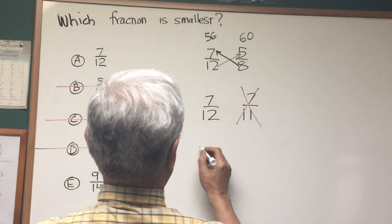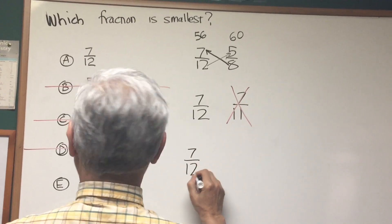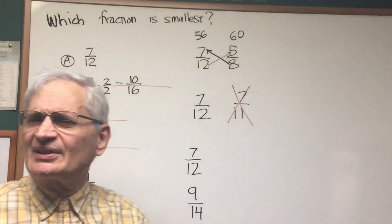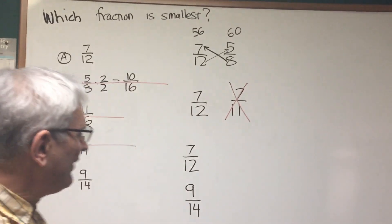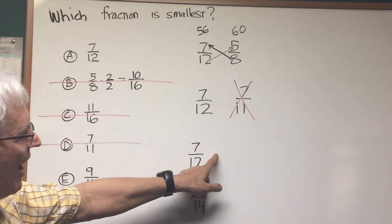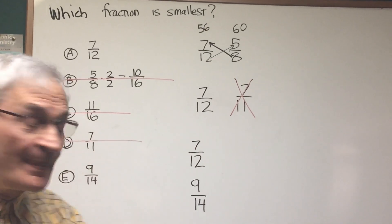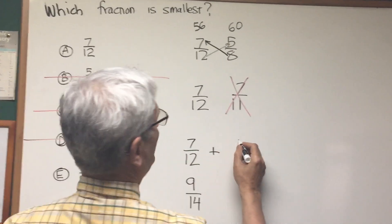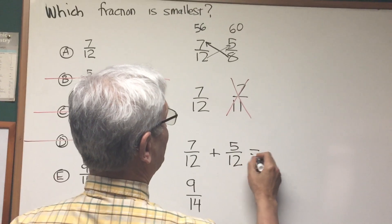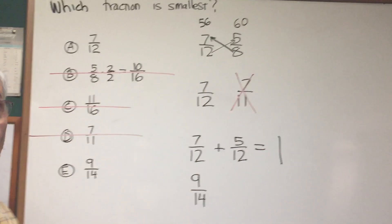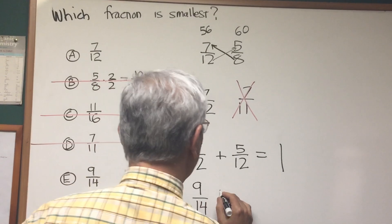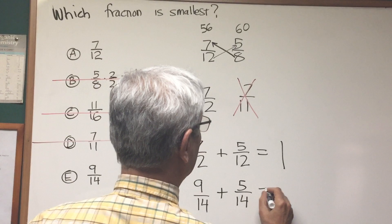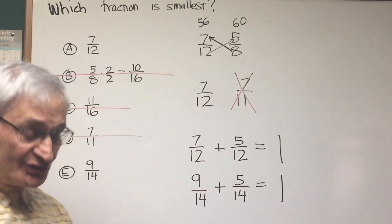So now, one remaining comparison between 7 twelfths and 9 fourteenths. And this is a sort of a little more esoteric method of comparison. I want to look at how far each of these fractions is from 1. How far do I have to go to get to 1 from 7 twelfths? 7 twelfths plus 5 twelfths is equal to 12 twelfths, which is equal to 1. What about 9 fourteenths? 9 fourteenths plus 5 fourteenths is equal to 14 fourteenths. That's also equal to 1.